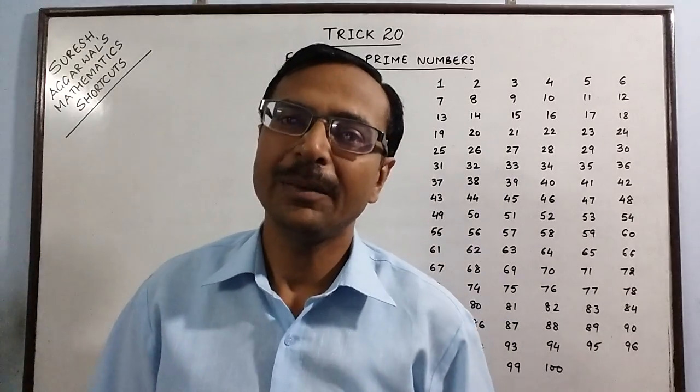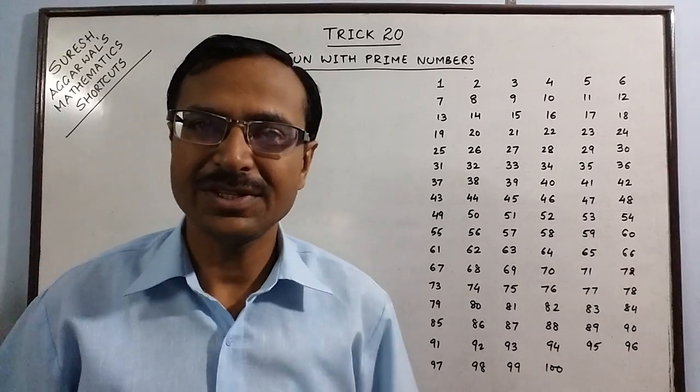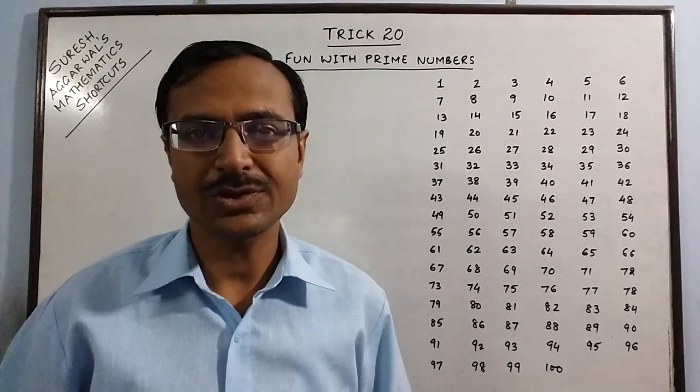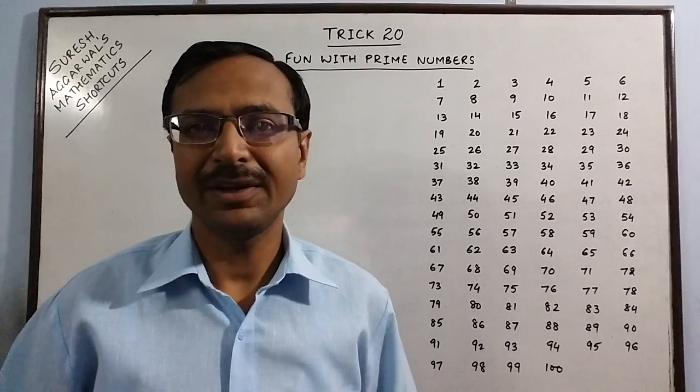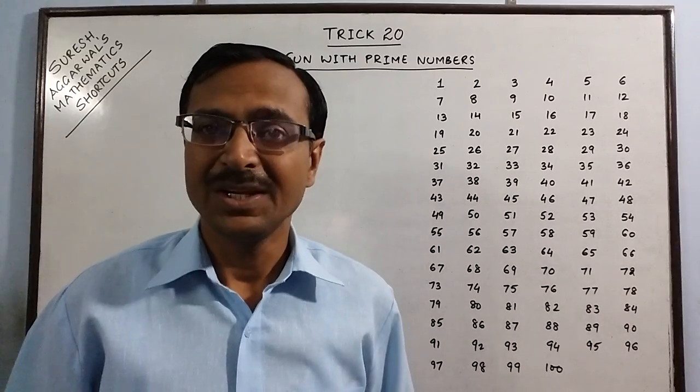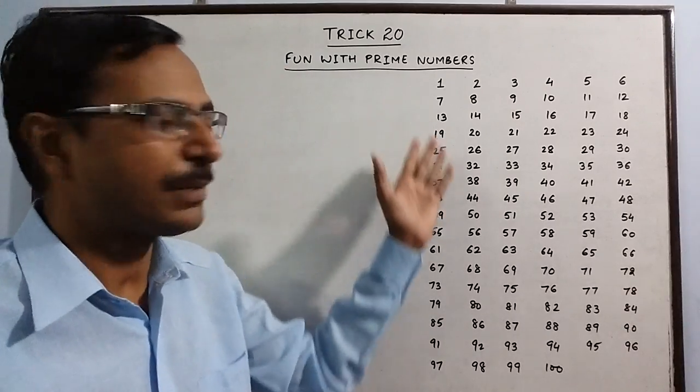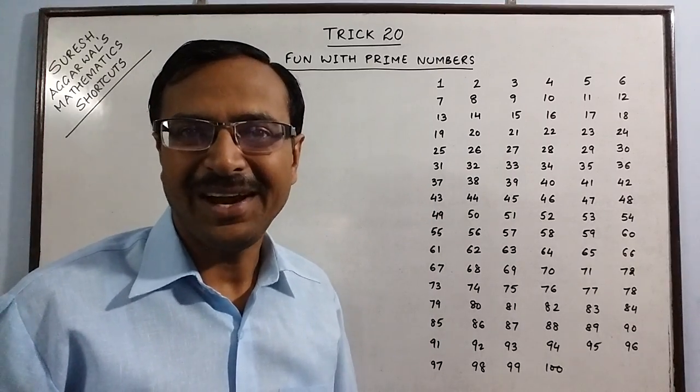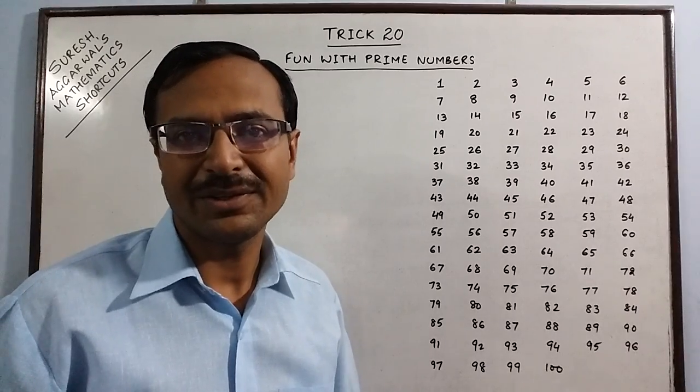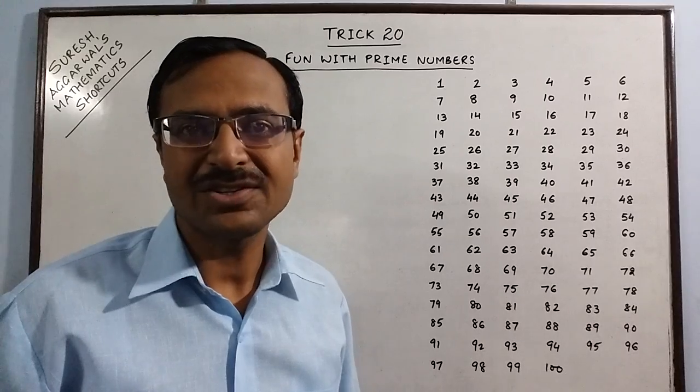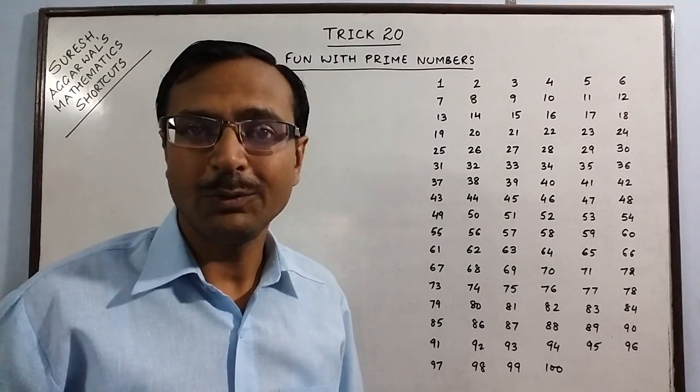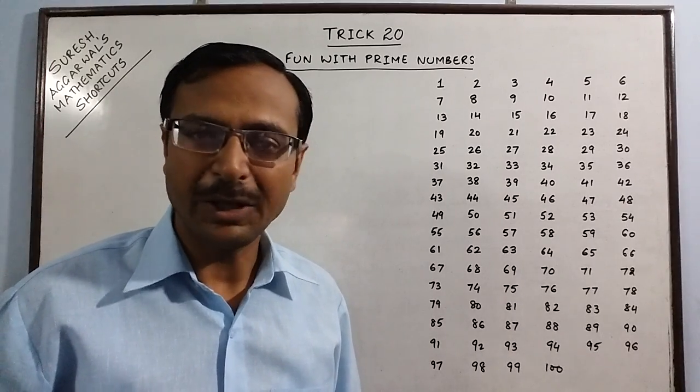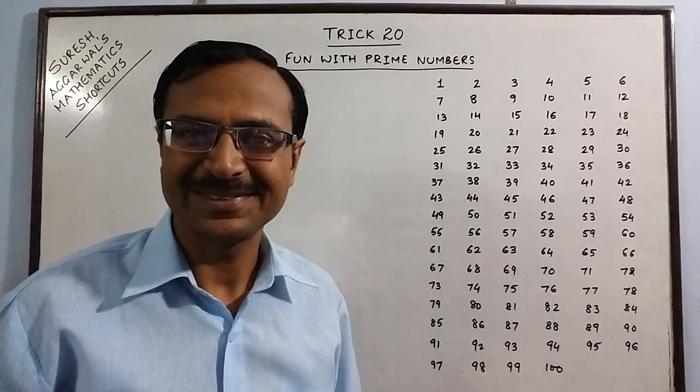Today in trick number 20, I am going to deal with prime numbers which are taught to students at junior level. Students of higher classes also struggle to spot prime numbers if they are given a 3-digit or 4-digit number. This concept of finding prime numbers was initiated in 3rd century BC and no one of the current generation remembers this. So I thought I will refresh this method once more and you will realize that it is so easy to spot all the prime numbers from 1 to 100 by utilizing just 15 seconds.